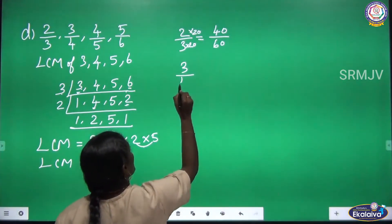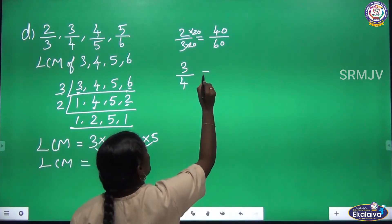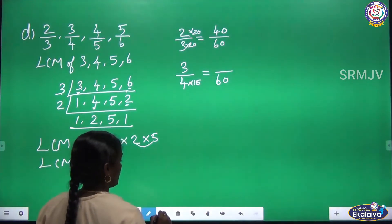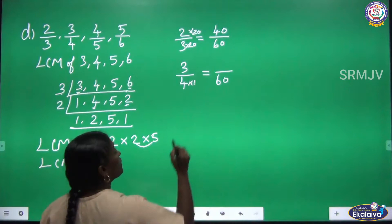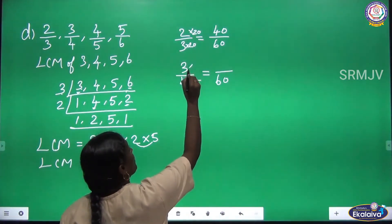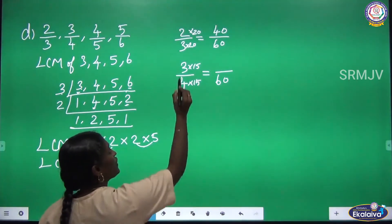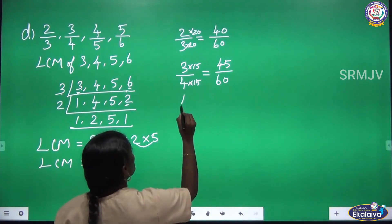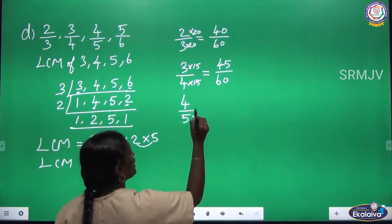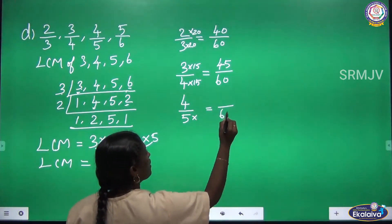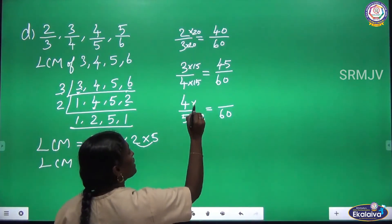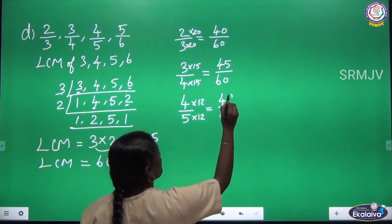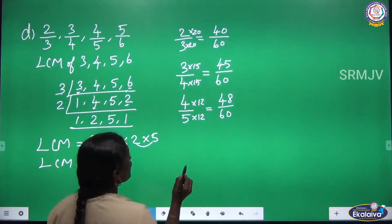The second fraction is 3 by 4. In the 4 table, 4 × 15 = 60, so we multiply the numerator by 15. 3 × 15 = 45. The third fraction is 4 by 5. In the 5 table, 5 × 12 = 60, so we multiply the numerator by 12. 4 × 12 = 48. So the third fraction is 48 by 60.